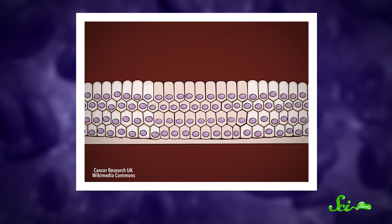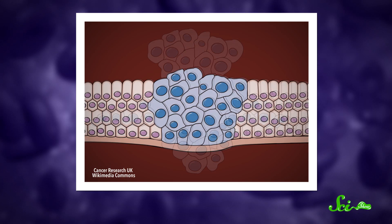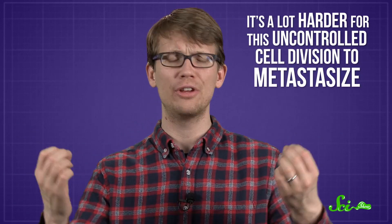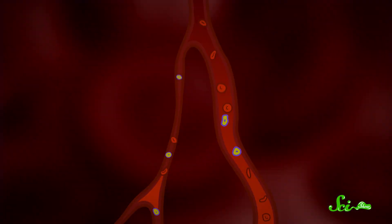A healthy cell will stop dividing when the area around it starts getting crowded, but cancer cells just keep dividing over and over, no matter how little room there is. In plants, a cell can keep dividing too, not because of genetics, but because of other factors like an infection or some kind of structural damage. The main advantage plants have here is that it's a lot harder for this uncontrolled cell division to spread to other areas.